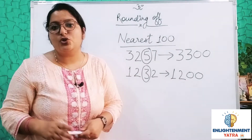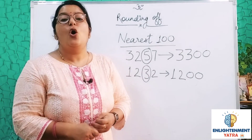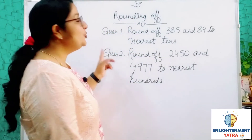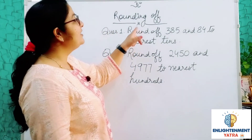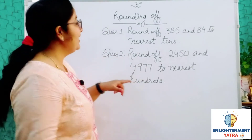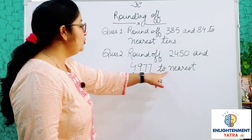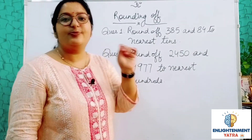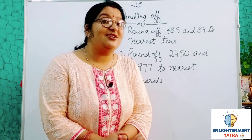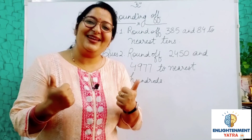In this way, you can solve many examples of the nearest 10 and the nearest 100, and you can enhance your estimation techniques more effectively. Champions, now I have got some questions for you. The first question is: round off 385 and 84 to nearest 10s. The second question is: round off 2450 and 4977 to nearest 100s. You have to give your answers in the comments box. Let's see who answered the questions correctly and first. Till then, we meet in our next class. Happy learning. Thank you.